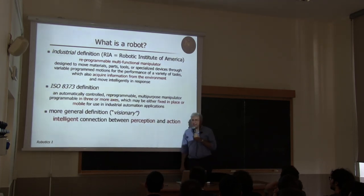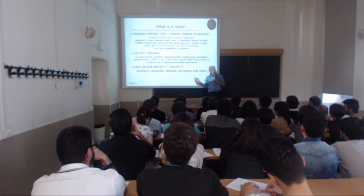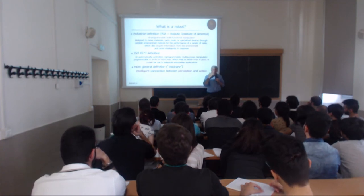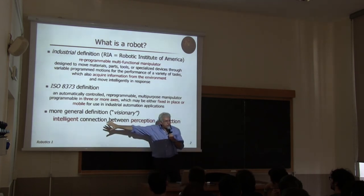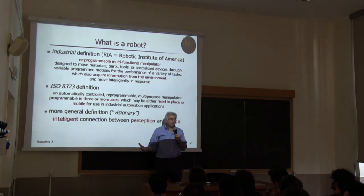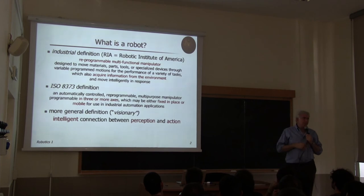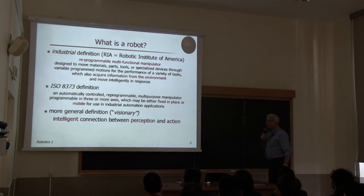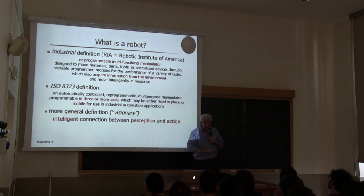Is a computer a robot? It has intelligence and — with a webcam — can perceive faces. But it lacks action: it cannot change the physical state of the world. Interestingly, one could say computer science is almost a subdomain of robotics in this framework. Early robots were not robots by this definition, but the examples shown today — with sensor-based control, visual servoing, and collision avoidance — fully qualify.